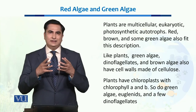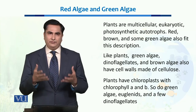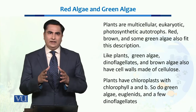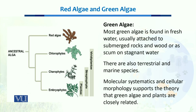This chlorophyll A and B is also present in the red and green algae, and in the phylogenetic analysis they are considered the ancestors of plants. Green algae is mostly found in freshwater, usually attached to rocks or other objects present in the water.